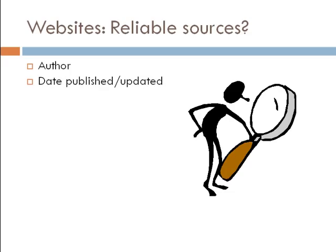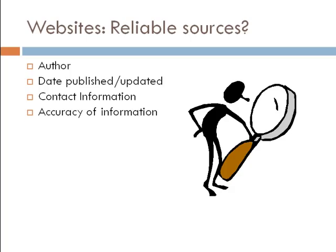Next, check to see if there's a publication date or a date last updated. This can be incredibly important when dealing with current topics. Is there contact information? This can be useful if you have questions about what you find on the website, because you can email the author for further information. You also need to verify the accuracy of the information on the page. You can do that by finding similar information on other reliable websites or from encyclopedias or articles.